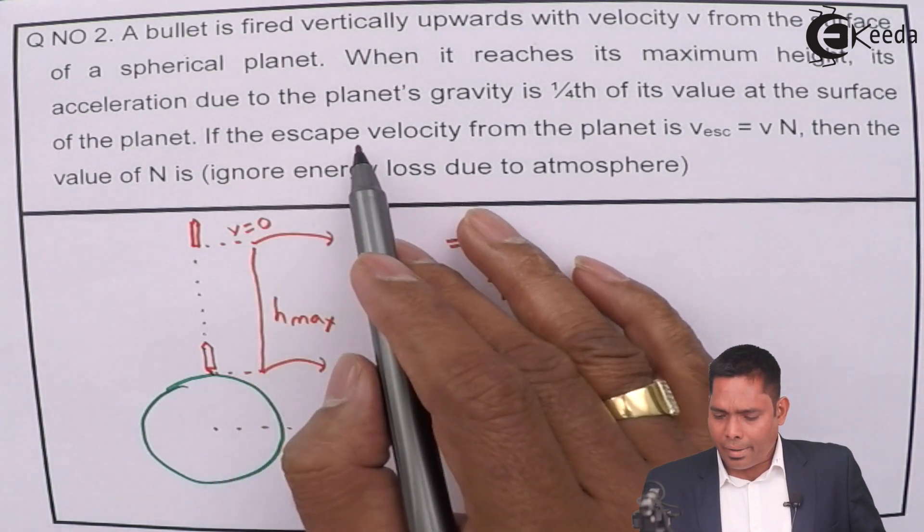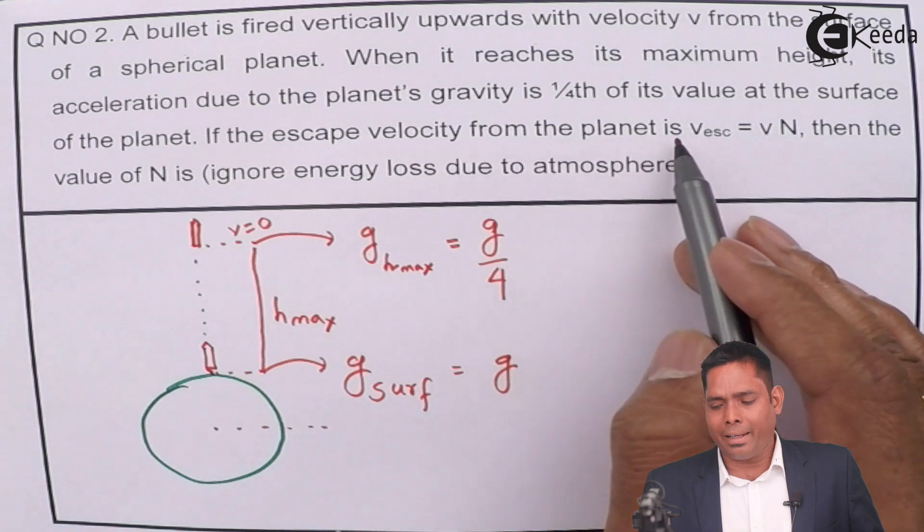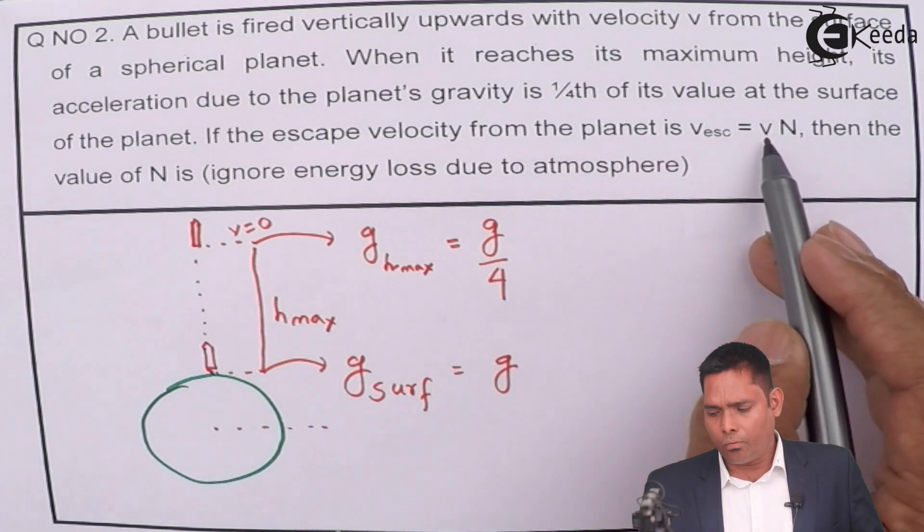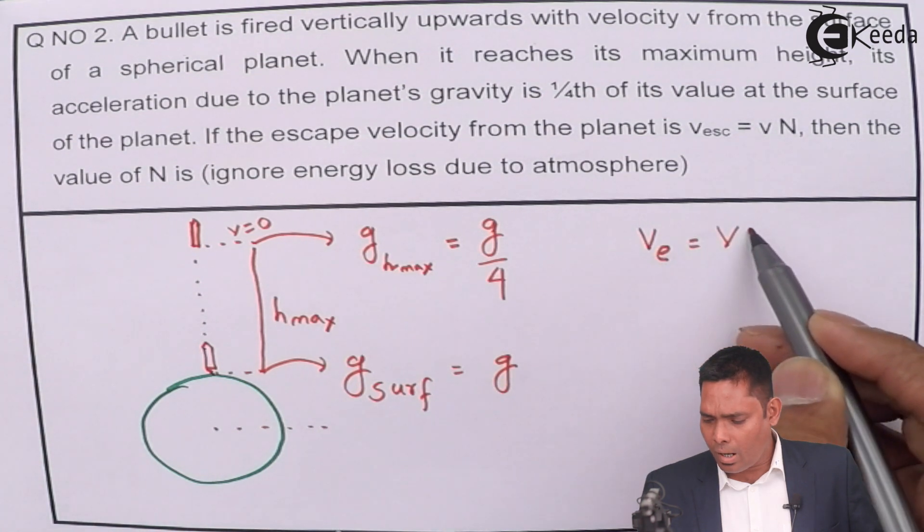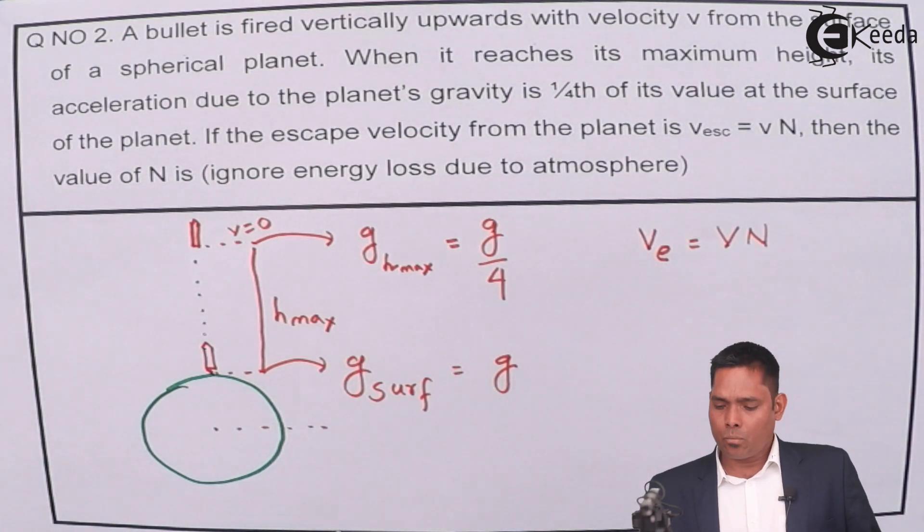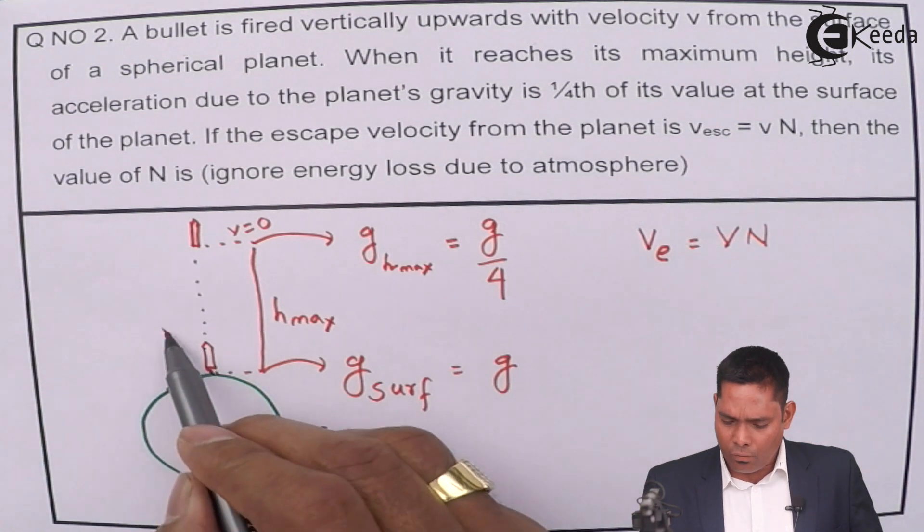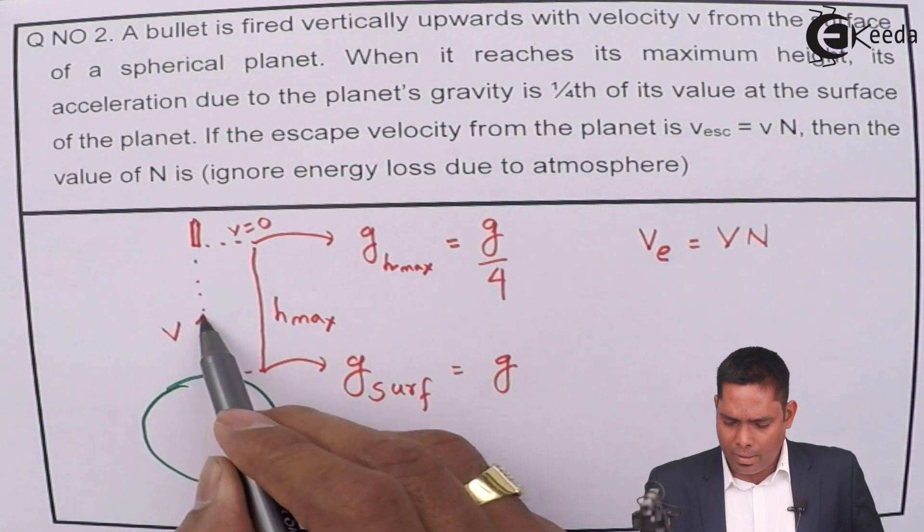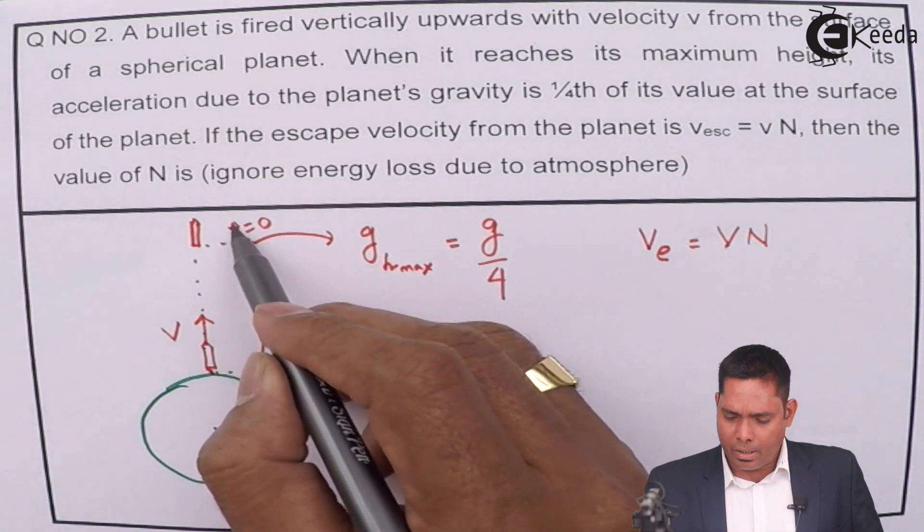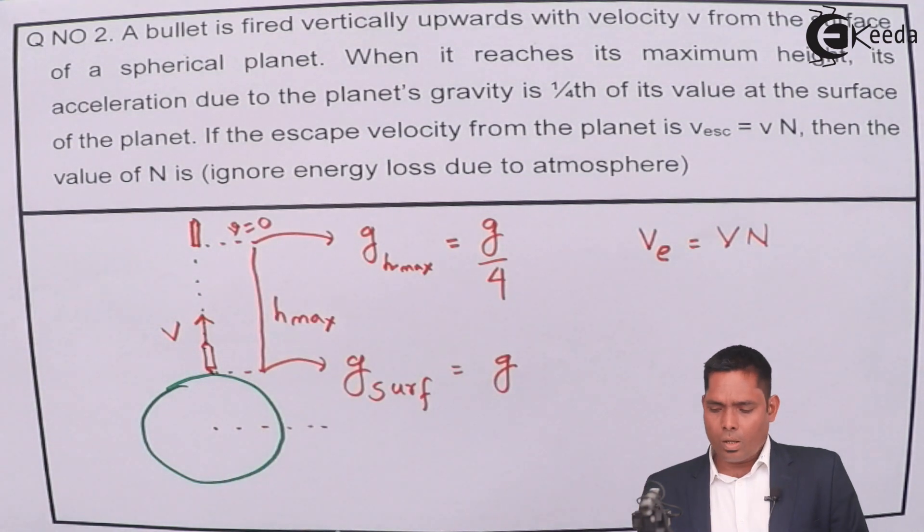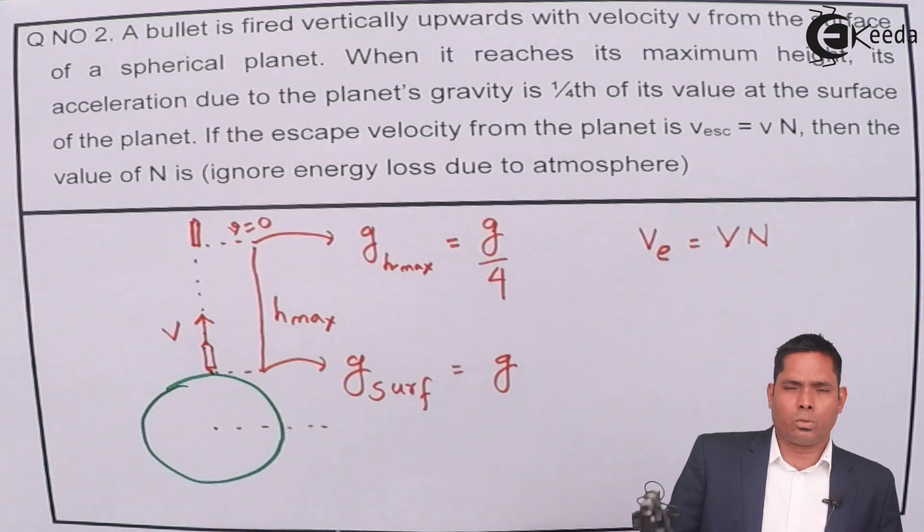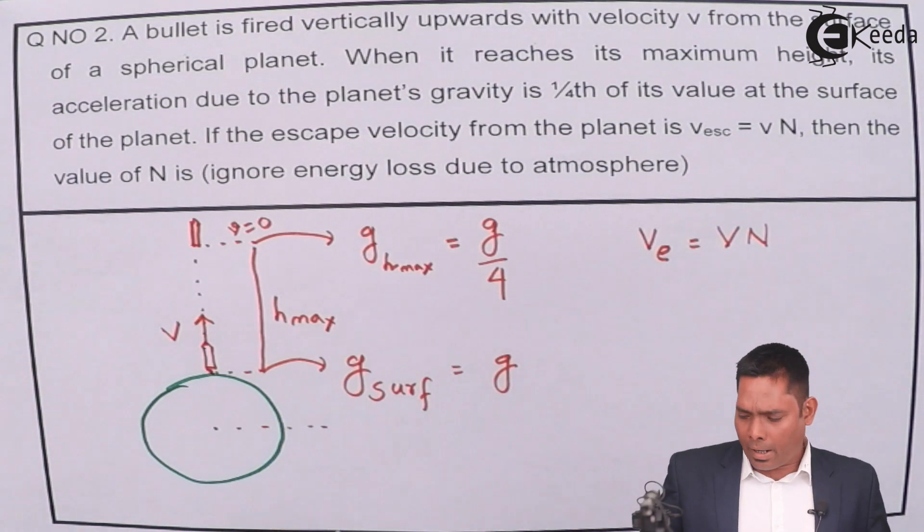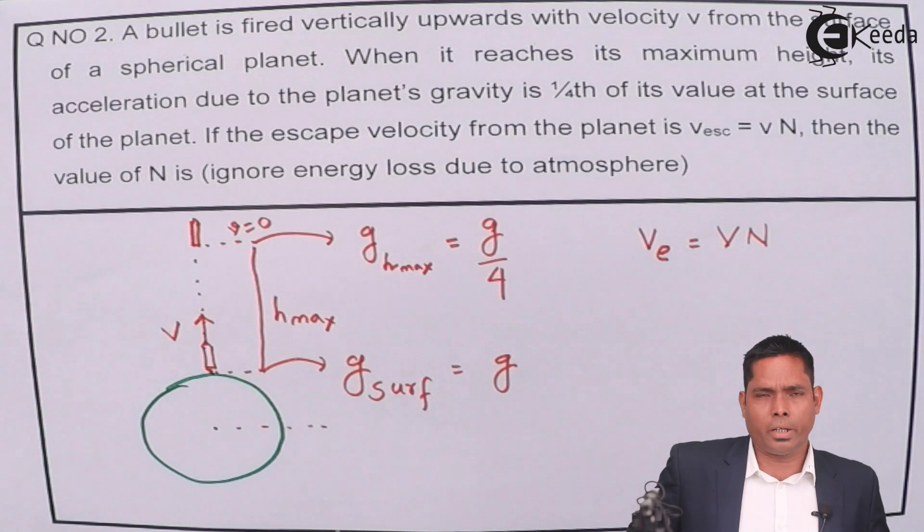If the escape velocity of the planet is V√N, given V_esc = V√N, then the value of N is - this is an integer type question and your answer should be from 0 to 9.